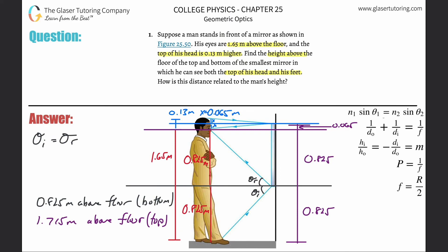So it says, you know, how is this distance related to the man's height? I mean, we kind of analyzed every little nitty-gritty detail here. We could also find the total length of the mirror by just subtracting these values. We can simply take those two values and subtract them: 1.715 minus 0.825. The total length of the mirror here is about 0.89 meters.